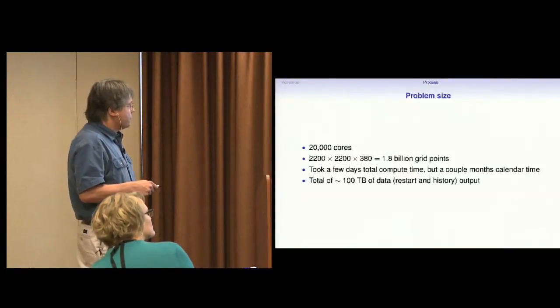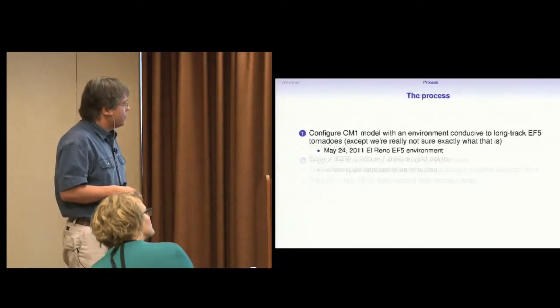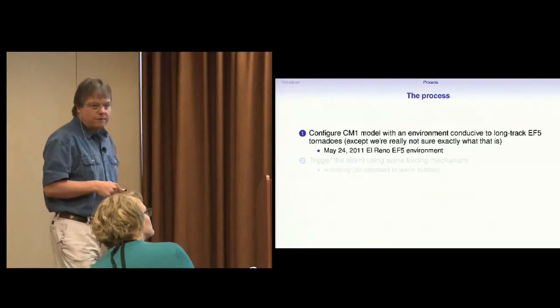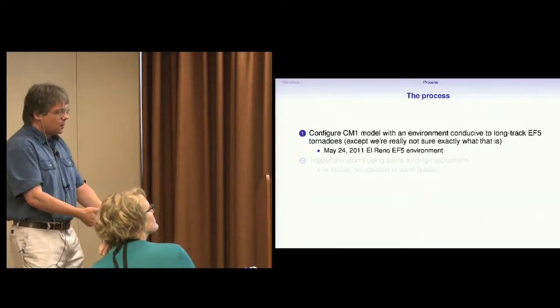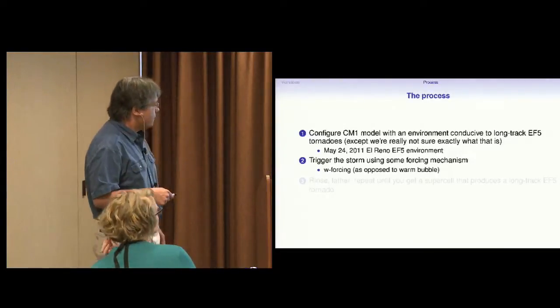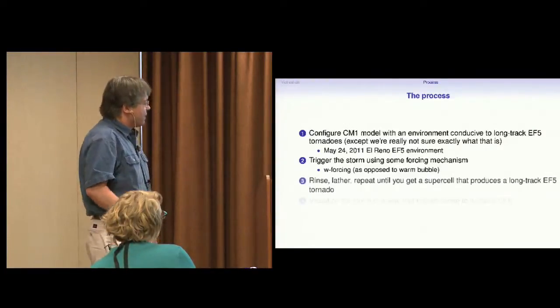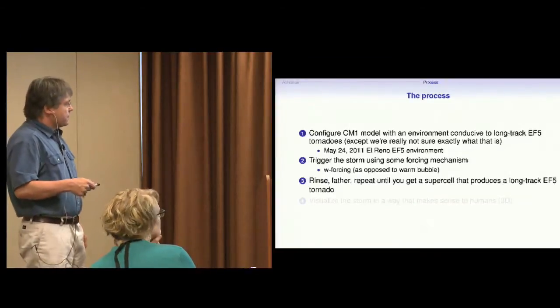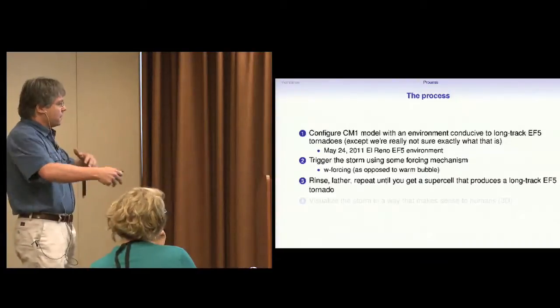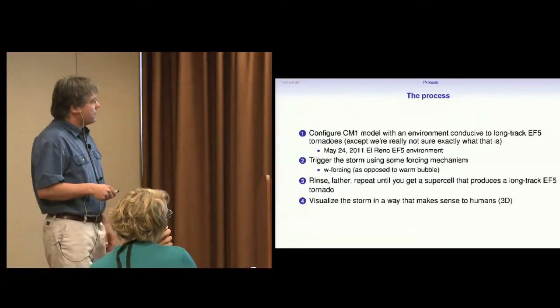We're only using 20,000 cores, about 2 billion grid points, a few days of compute time, 100 terabytes of data roughly made from the output of this model. So what we did was we took the environment adjacent to an actual storm that produced a long-track EF5, and we triggered a cloud within that environment. So we grew the storm, and we used a different forcing mechanism that's been typically used in meteorology, which is called a warm bubble, like a bubble of warm air. We actually used an updraft nudging technique to get the storm going. And of course, things never work out, and I won't tell you my sob stories about how I ran out of allocation right at the end. But anyway, we got the tornado to form, and I've been spending the last quite a while just analyzing the storm.